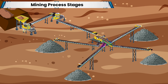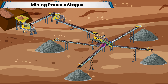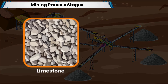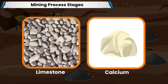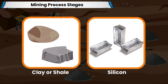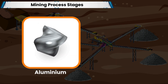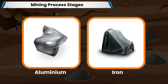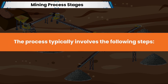The mining process involves extracting the primary raw materials needed for cement production. These materials primarily include limestone, which provides calcium, and clay or shale, providing silicon, aluminium, and iron. The process typically involves the following steps.